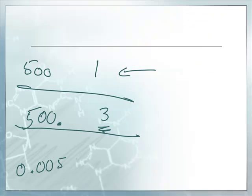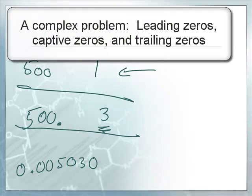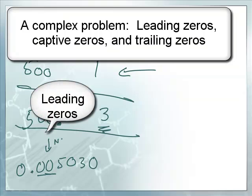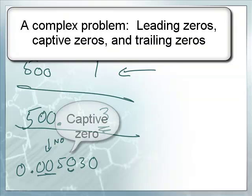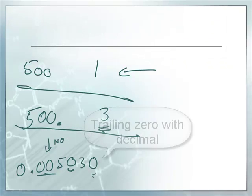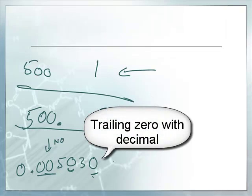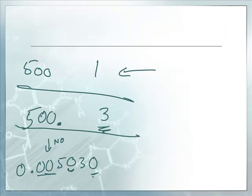We've got 0.005030. So we have leading zeros, trailing zeros, and captive zeros, and a decimal. Leading zeros are never significant, so these ones right here don't count. Now, the captive zero is always significant. So the 503, we know for sure. The one in question is the zero at the end. Trailing zeros are significant if there's a decimal in the number. So there's a decimal in this number. 5030 are significant. So there are four significant figures: the five, the zero, the three, the zero. The ones you don't count are these two leading zeros.